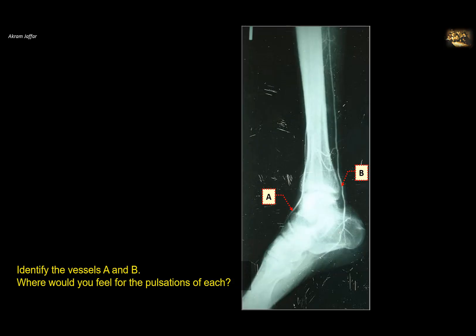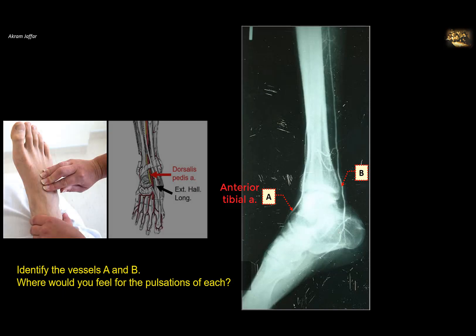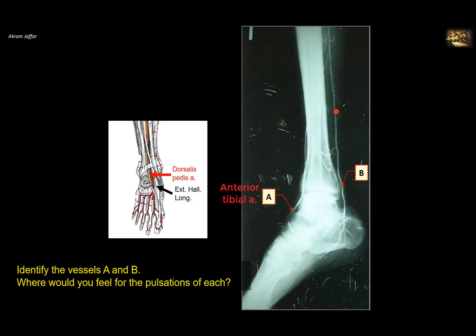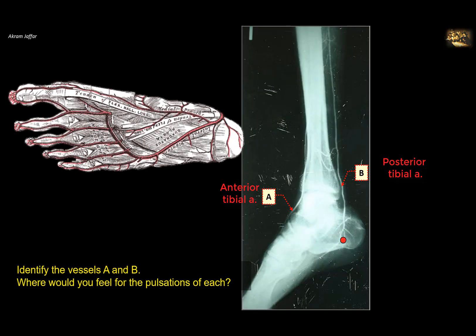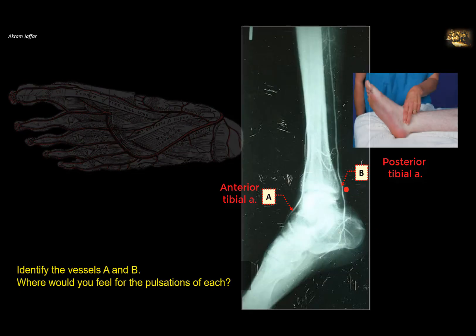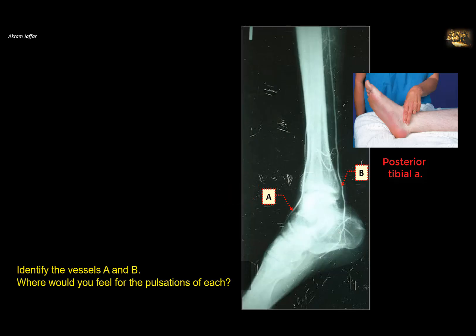Identify vessels A and B — where would you feel for the pulsations of each? This is an angiogram in a lateral view of the leg and foot. Anteriorly is the anterior tibial artery, which continues as the dorsalis pedis artery, felt on the dorsum of the foot just lateral to the tendon of extensor hallucis longus. The other is the posterior tibial artery, which passes behind the medial malleolus and the tarsal tunnel, with terminal branches — medial and lateral plantar arteries — felt behind the medial malleolus.